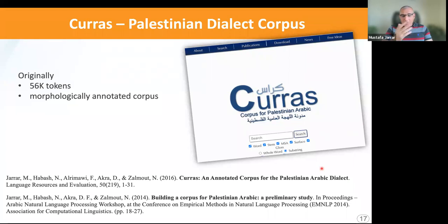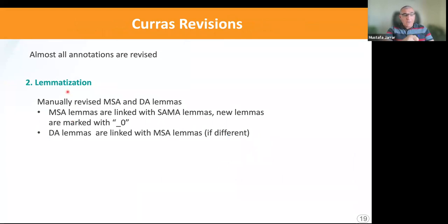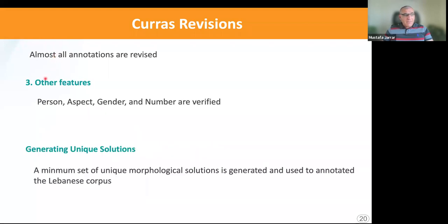Now I will talk about the revisions of Corras. Corras was originally published a few years ago, and because it was used in several applications, and especially when we came to reuse the annotations for the Lebanese corpus, we found some mistakes, or areas where we wanted to do some improvements. The improvements we did are the following: first, we fixed all tokenization and BOS tags and made sure they are correct. We also revisited the lemmatization, the MSA lemmas and the dialect lemmas. We made very sure that every single lemma is mapped to SAMA, or underscored with zero to indicate it is an MSA word that does not exist in SAMA, and we made sure they are linked with dialect lemmas. We revisited other features as well.